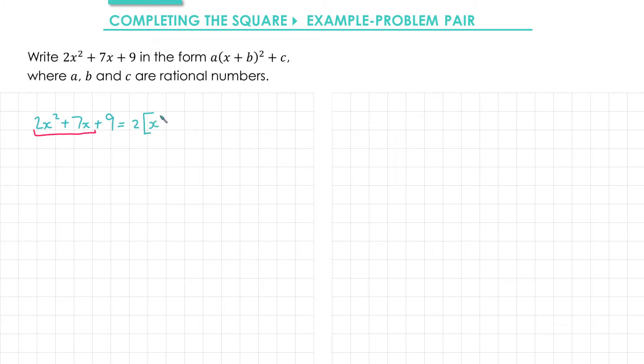Pulling out a 2 gives us x squared and then half of the 7 is 7 over 2. So what I've written here in the red part is the same as the red part here. Finally don't forget the plus 9.